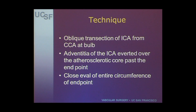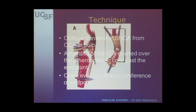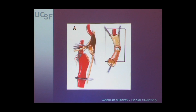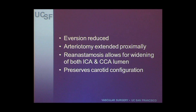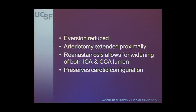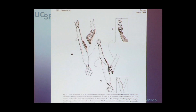Note that the adventitia of the internal carotid is averted over the atherosclerotic core past the endpoint, and it allows close evaluation of the entire circumference of the endpoint. When the eversion is reduced, the arteriotomy is extended so that the common carotid can be carefully endarterectomized as well. By reanastomosing the vessels, it allows for widening of both the internal carotid and the common carotid, preserving the carotid configuration, and in a sense patching both vessels with each other.